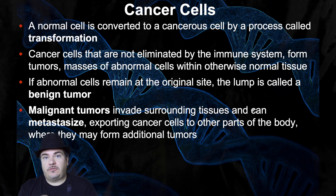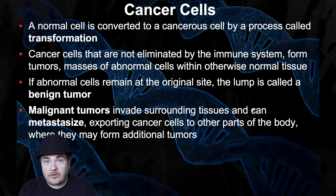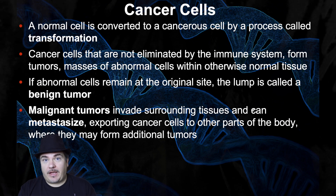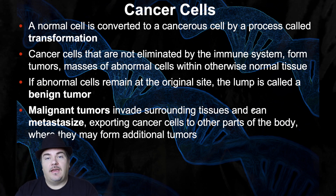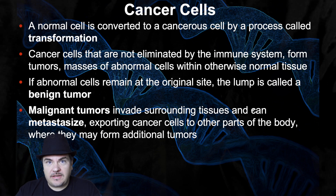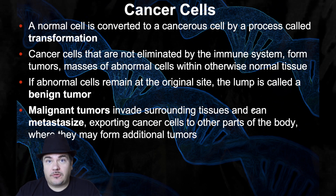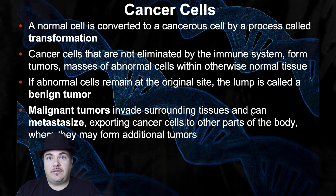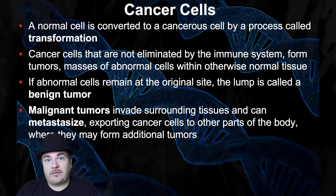For example, when cells start to get too crowded and growing too close to each other, they should tell each other to stop dividing — but cancer cells don't; they just keep dividing. For much greater detail on that, take a higher level biology course. So that concludes our lecture on the cell cycle and mitosis.